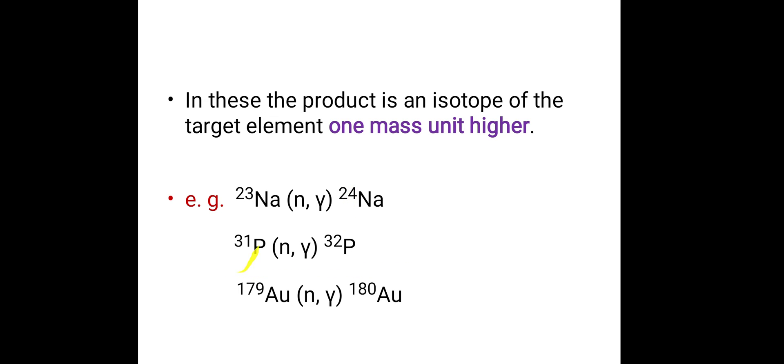Second example, when phosphorus 31 is bombarded with neutron, gamma photons are emitted with the formation of phosphorus 32. Similarly, this example. In all these three reactions there is emission of gamma photons.